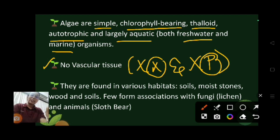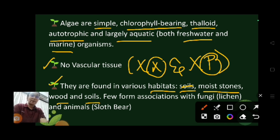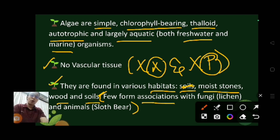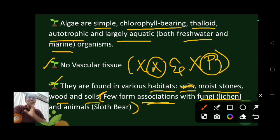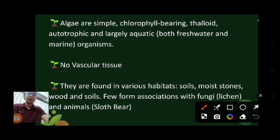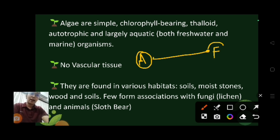Algae are found in various types of habitats — they can be found in soil, moist stones, wood, and so on. A few forms are associated with fungi in what is called a symbiotic association, meaning both individuals are mutually benefited by each other.